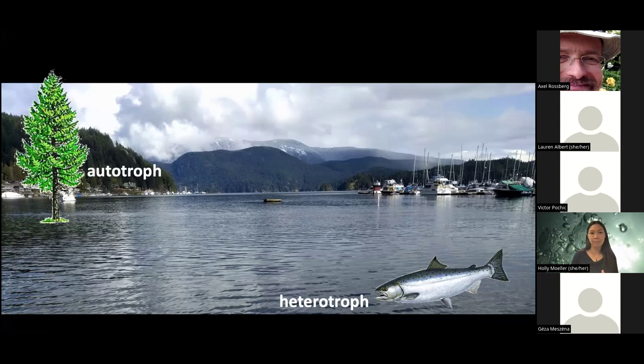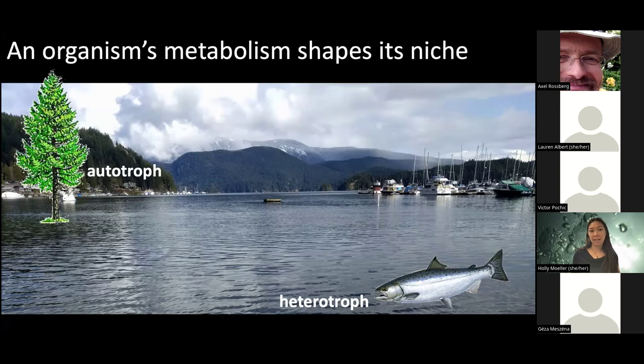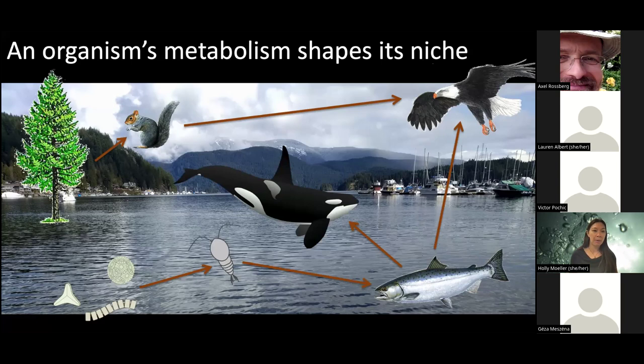For example, the Douglas fir trees in the background are autotrophs, which means they use the energy of sunlight to fix organic carbon and produce it for themselves. Whereas heterotrophs, like the salmon — a canonical fish of the Pacific Northwest — need to obtain their organic carbon from another organism for their growth and reproduction. The metabolism these organisms utilize shapes their ecological role, or niche, and how they interact with other species in a food web.